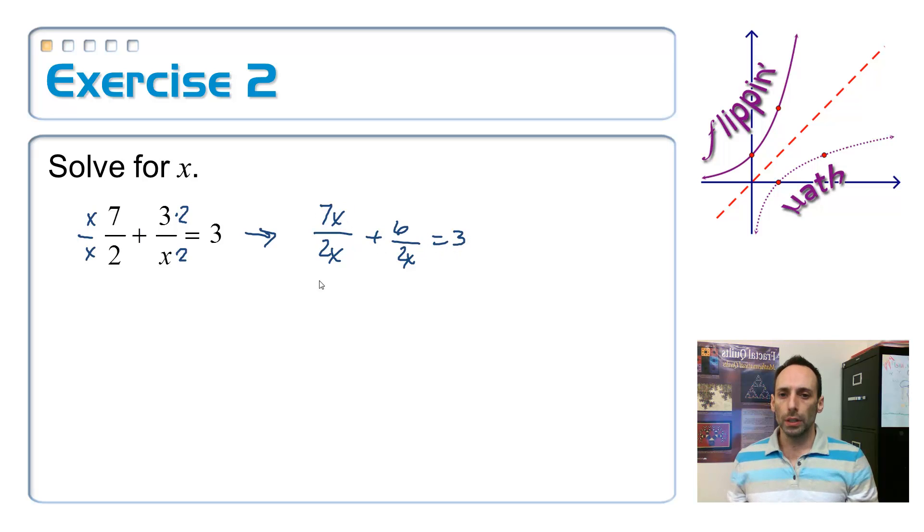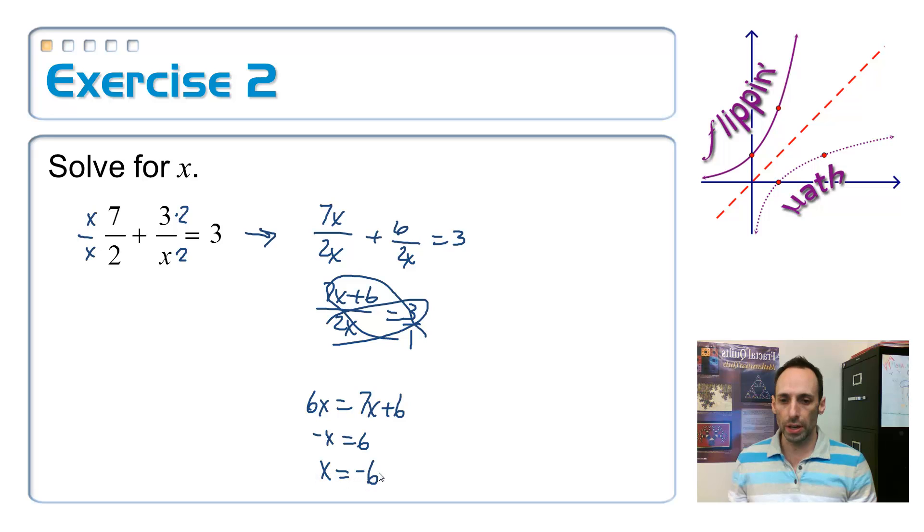So this new equation is 7x over 2x plus 6 over 2x is equal to 3. Keep simplifying here, and I get 7x plus 6 over 2x is equal to 3. Now I can set this up as a proportion as if I think of 3 as 3 over 1. So let's cross-multiply here. 6x is equal to 1 times the other one, 7x plus 6. Subtract that over. Negative x equals 6, so x equals negative 6. There's the answer.